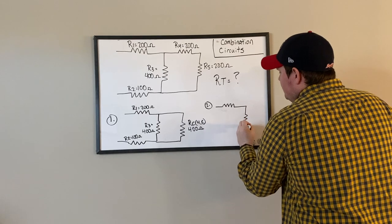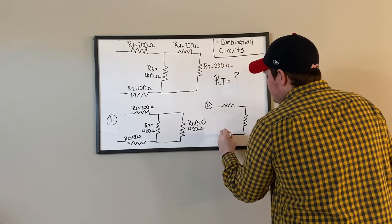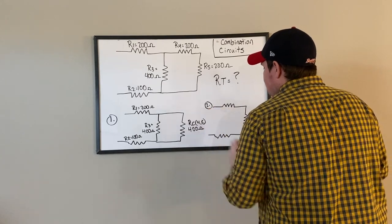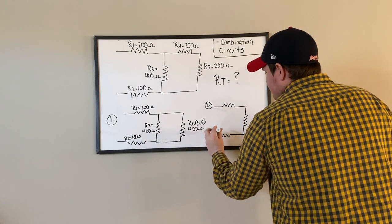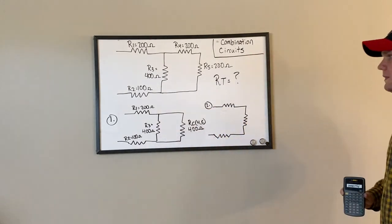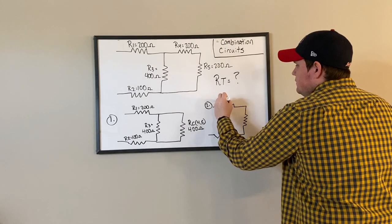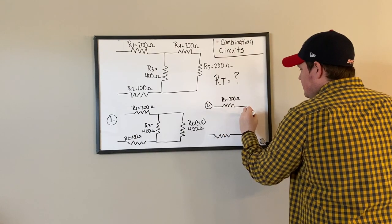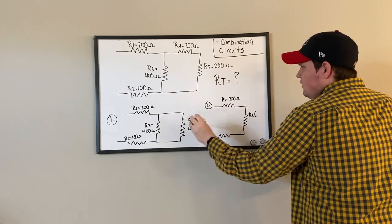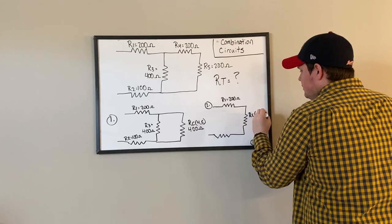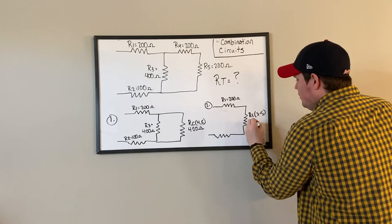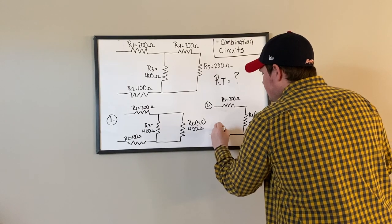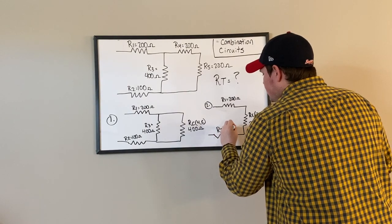R1 is 200 ohms, my new resistor RC3 through 5 is 200 ohms, and R2 is 100 ohms.